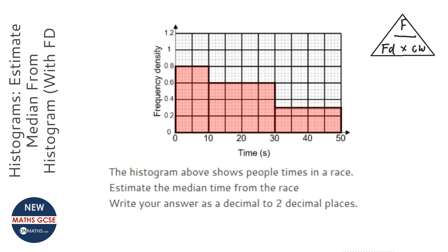The first thing you need to do to work out the median is to work out what the total frequency is. I'm going to go through these bars and multiply the frequency density by the class width. This first one is 0.8 times 10 which is 8. Next one is 0.6 times 20 which is 12, and the last one is 20 times 0.3 which is 6. So the total is going to be 26.